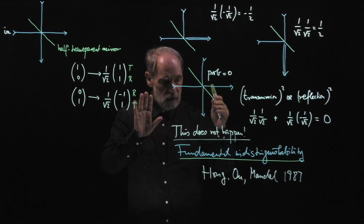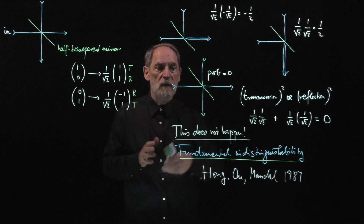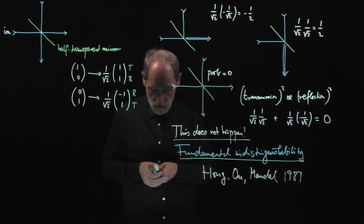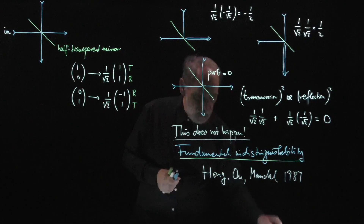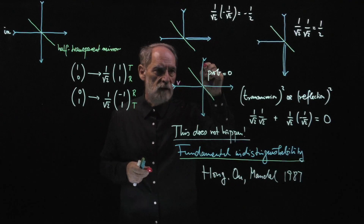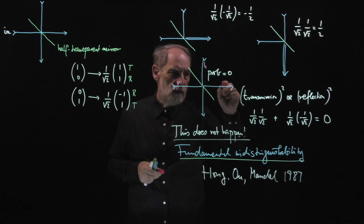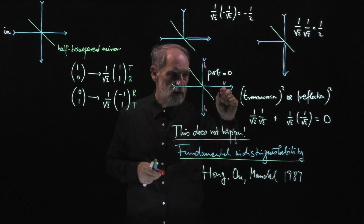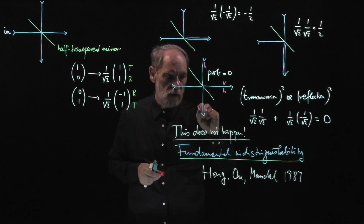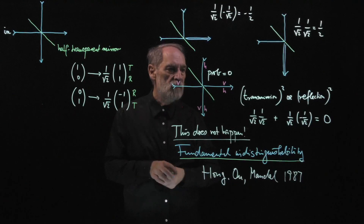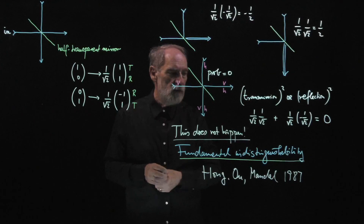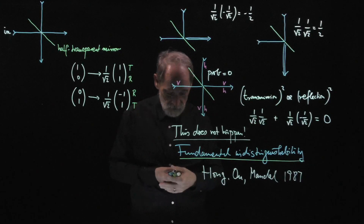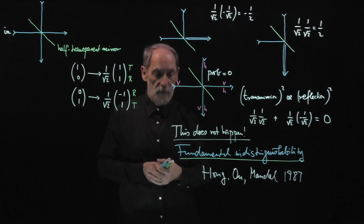Photons can also be made distinguishable by having different polarizations. If the arriving photon from one side is vertically polarized and the other is horizontally polarized, then by checking the polarization of the outgoing photons I can tell whether both were transmitted or both were reflected. A vertically polarized photon coming out one side and a horizontally polarized photon from the other means both were transmitted; the reverse means both were reflected. So both-transmitted and both-reflected are now distinguishable processes, and all four output cases are possible.